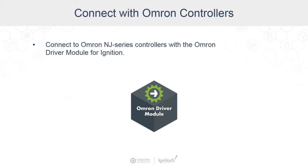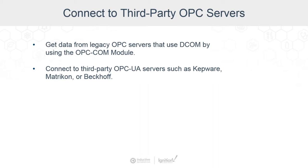Ignition doesn't have drivers for every device — we're not a driver company. We provide drivers for many major industries, but Ignition can connect to various third-party OPC servers, either through DCOM or through OPC UA. Before OPC UA, the original version of OPC used Microsoft DCOM as a uniform way for industrial applications to share data. But DCOM wasn't very easy to work with and has become somewhat outdated. If you have legacy OPC servers that use DCOM, you can get to that data by using the OPC COM module. Ignition also connects to third-party OPC UA servers such as those made by Kepware, Matricon, and Beckhoff. Because of the standards that Ignition is built on, you can connect to any device — either through Ignition's native OPC or a third-party OPC server.